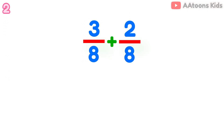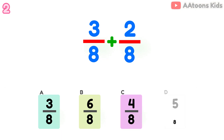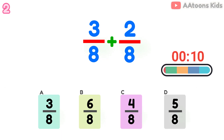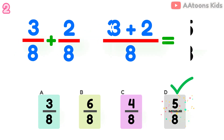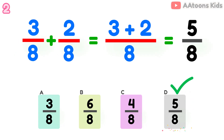Add the fractions: 3 over 8 plus 2 over 8. The answer is 5 over 8.